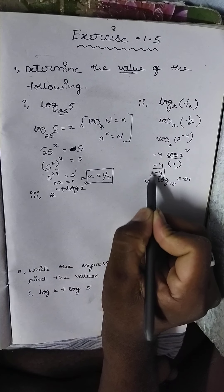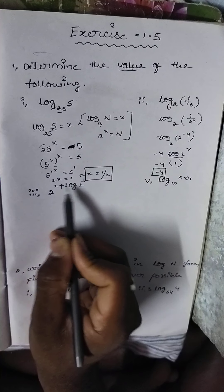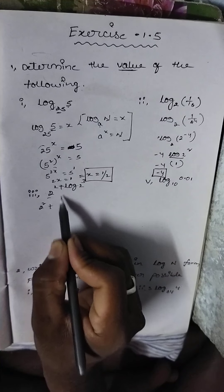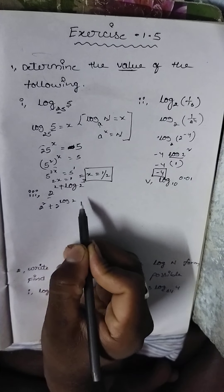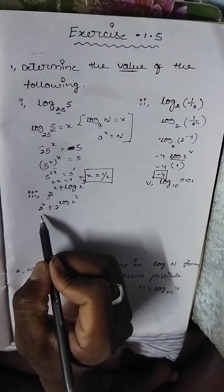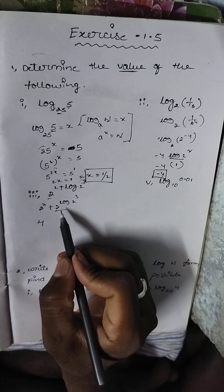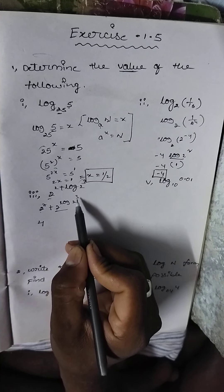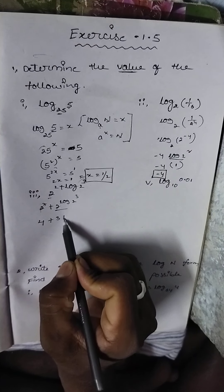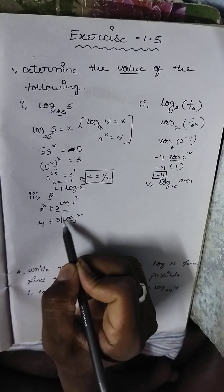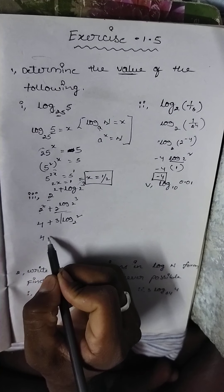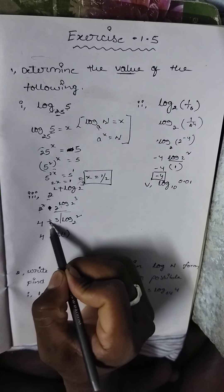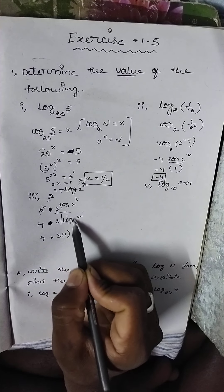Next question involves 2^(2 + log_2(8)). Using the formula a^(m+n) = a^m × a^n: 2^2 times 2^(log_2(8)). Now 2^2 = 4, and using the formula log base a of x^n = n·log_a(x), we get 3·log_2(2). Since log_2(2) = 1, this gives 4 × 3 = 12 as the required answer.